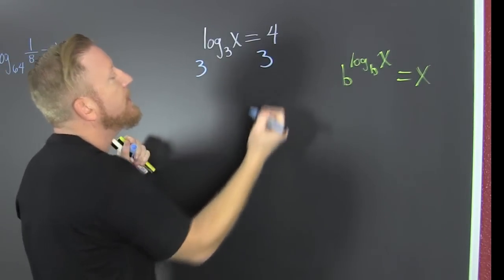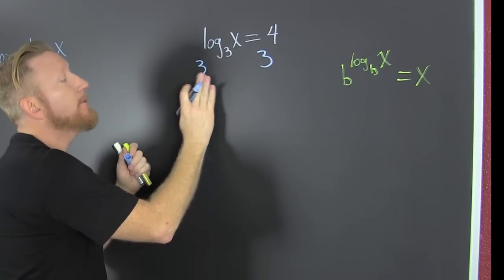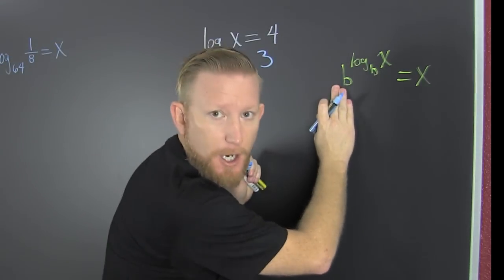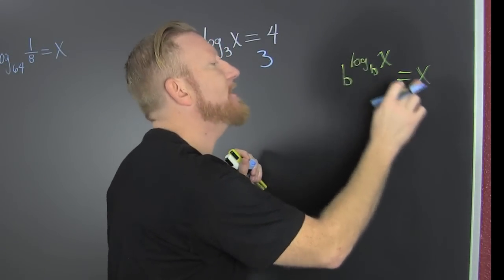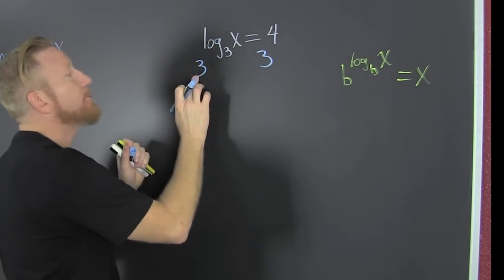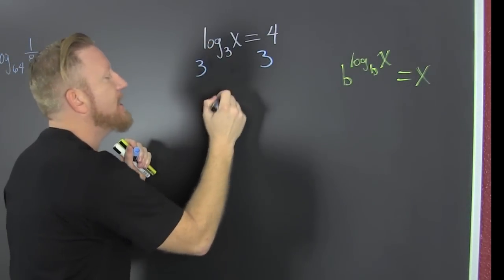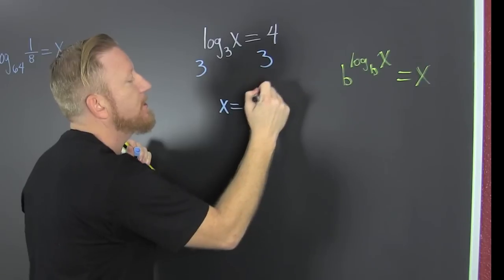I want a 3. I want a 3. Oh wait. Now what? We see over here on the left hand side, if the carpet matches the drapes, you get the argument. And 3 to the log base 3 of x is x, and that's equal to 3 to the 4th.